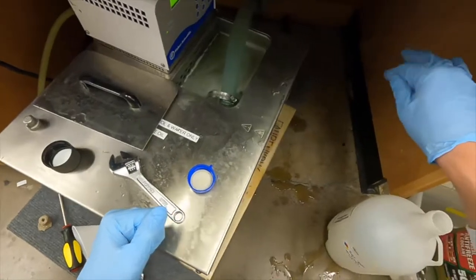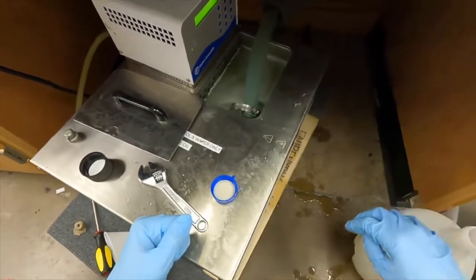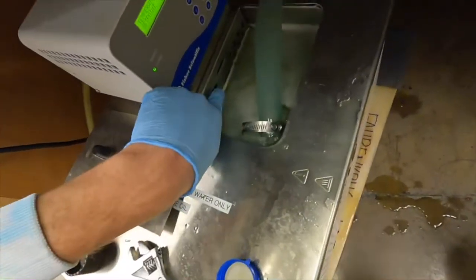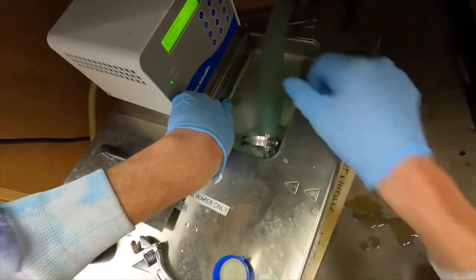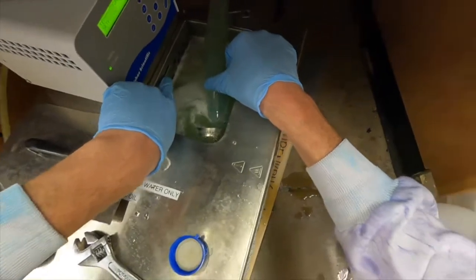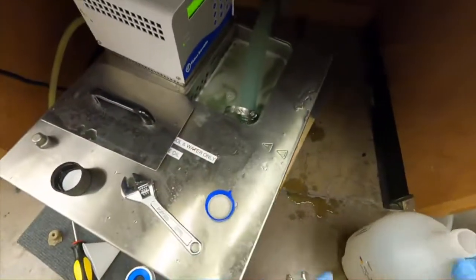Usually we turn this on a couple hours before we start. These are the lines I was talking about. This is the low line - right now this is too low, we need to add more fluid - and this would be the maximum fill line.